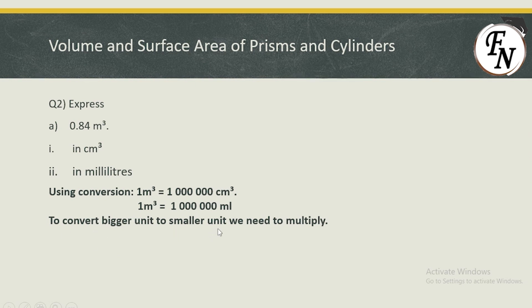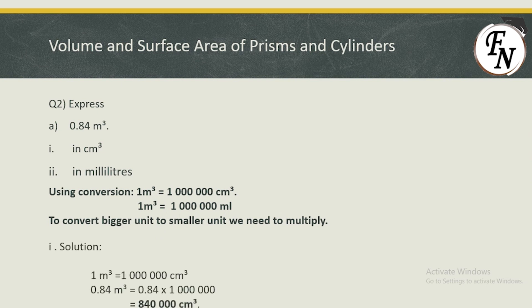To convert a bigger unit to a smaller unit, we need to multiply. Meter cube is the bigger unit and centimeter cube and milliliters are smaller. So we multiply 0.84 meter cube by the conversion unit of 1,000,000. We have multiplied because we are converting bigger unit to smaller unit, and we have obtained 840,000 cm³.